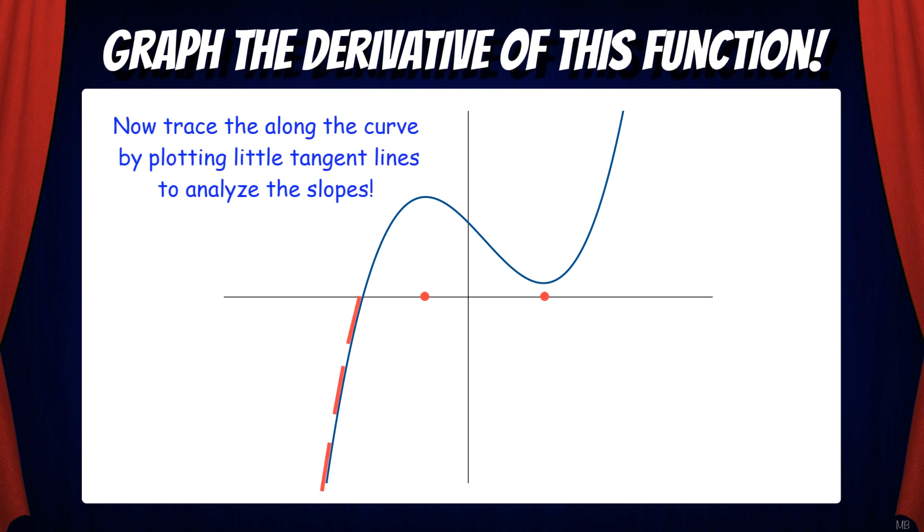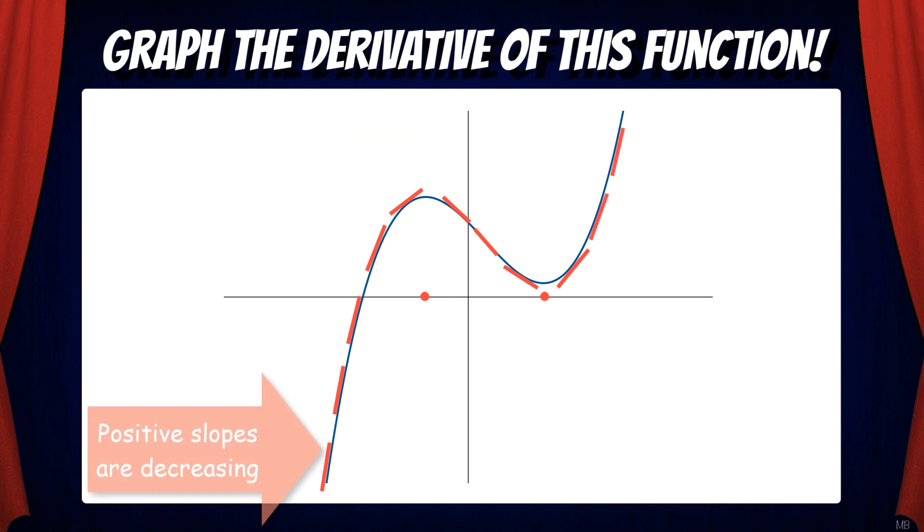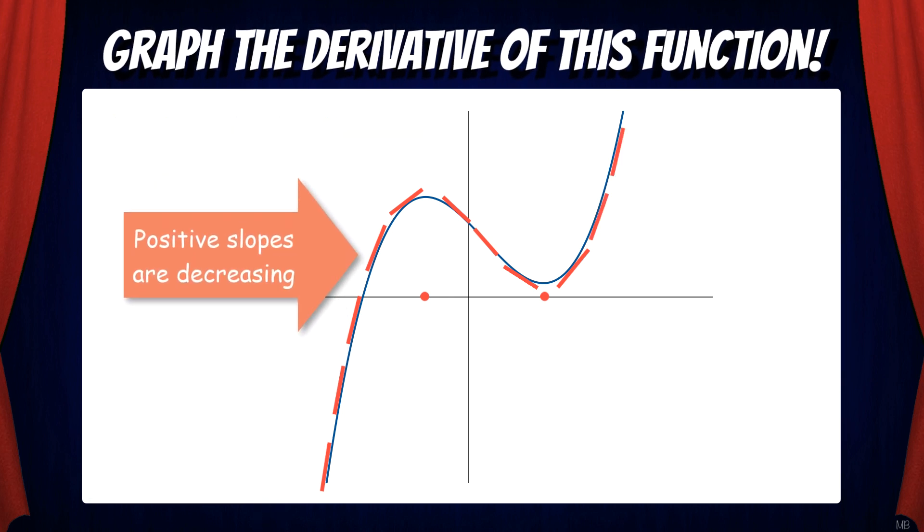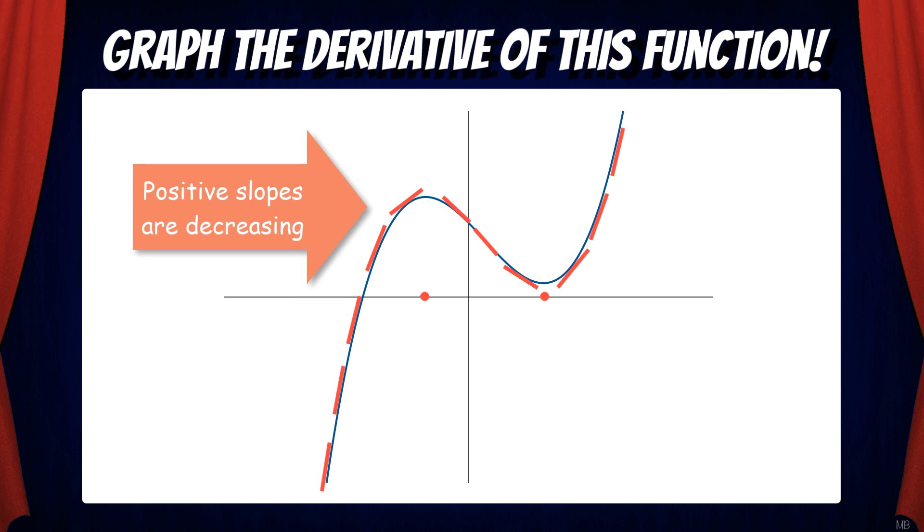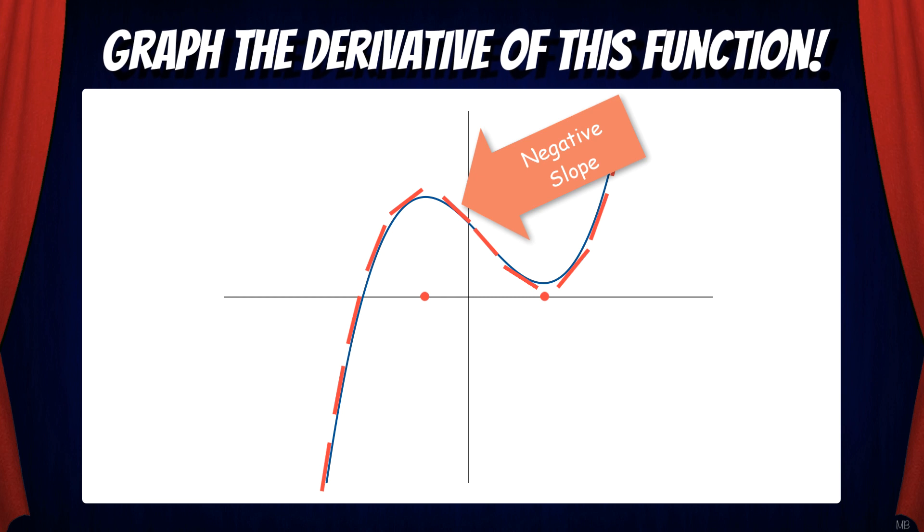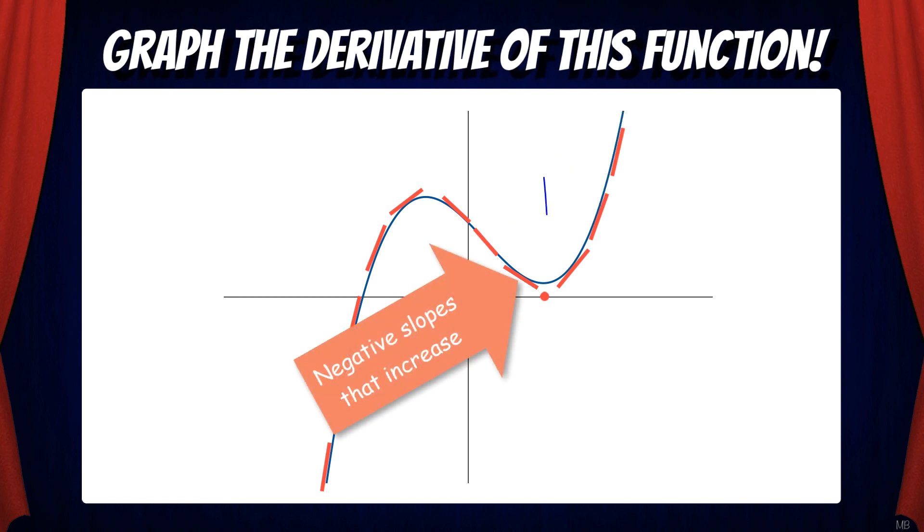Now I'm going to trace along the curve plotting little tangent lines to analyze the slopes. Here we can see we have positive slopes that are decreasing. After crossing the local maximum, we can see that we have a negative slope. And that negative slope decreases until it hits its lowest negative value.